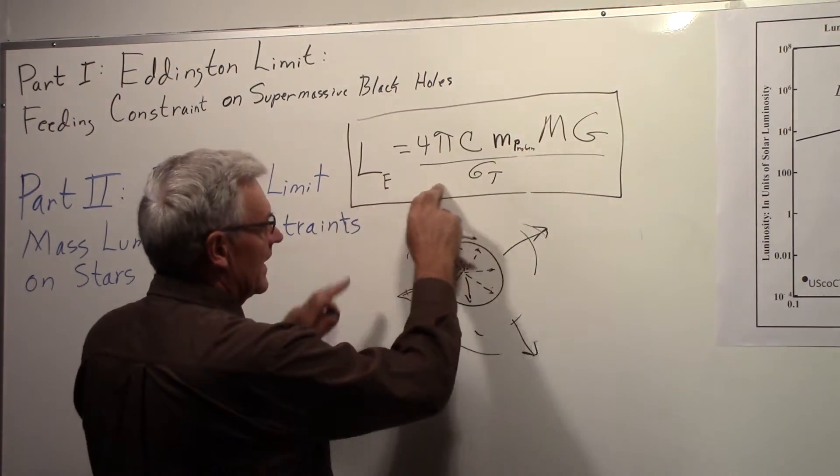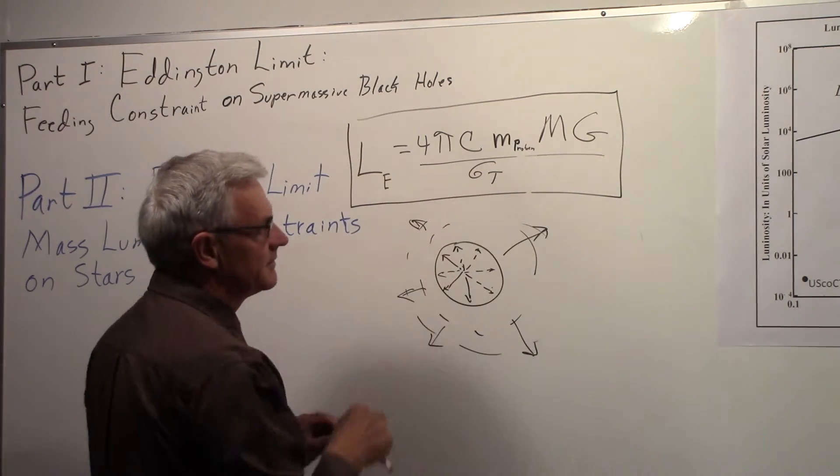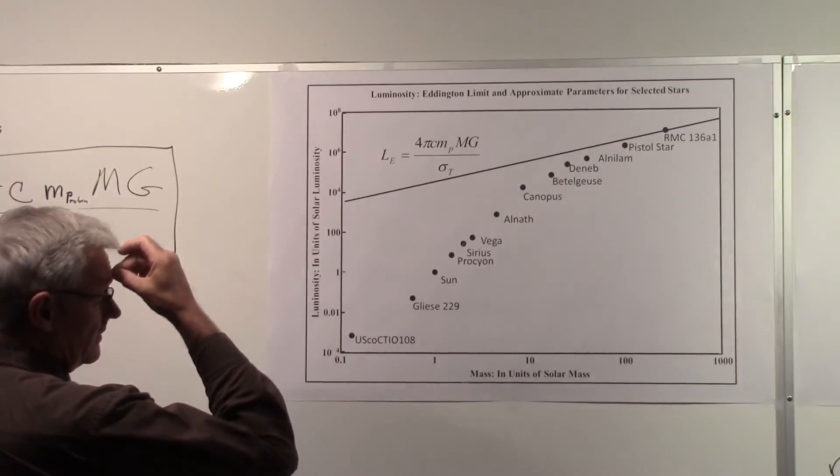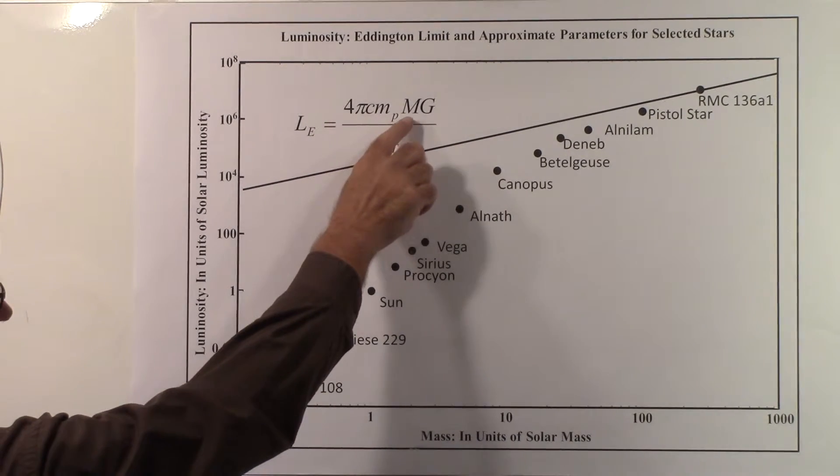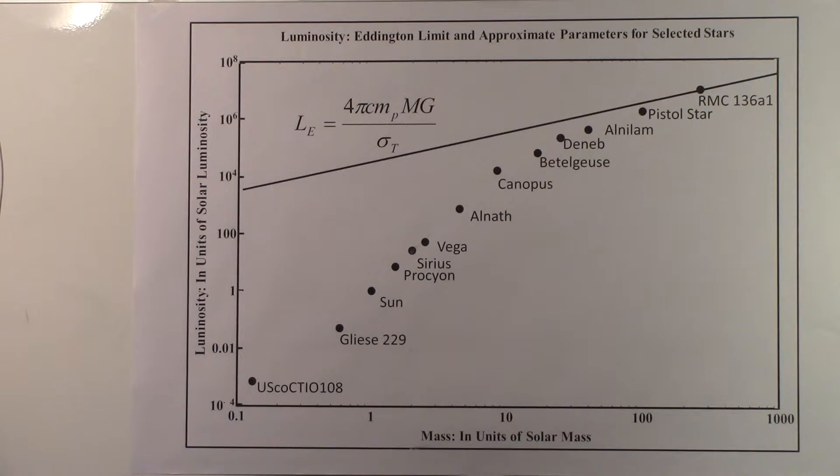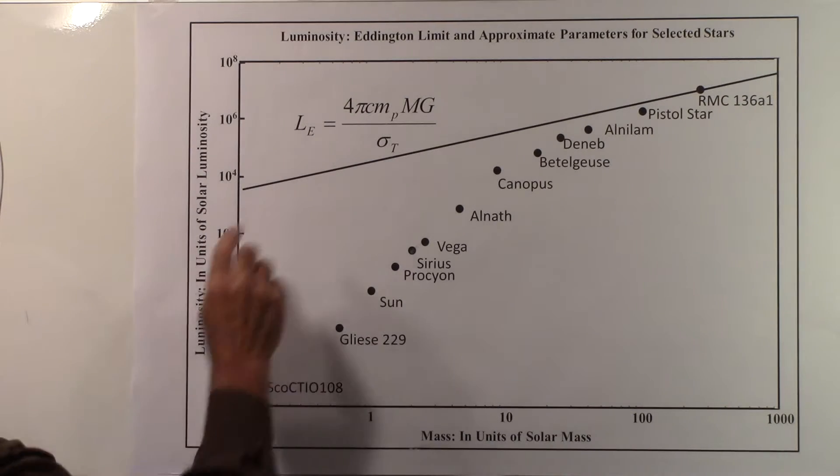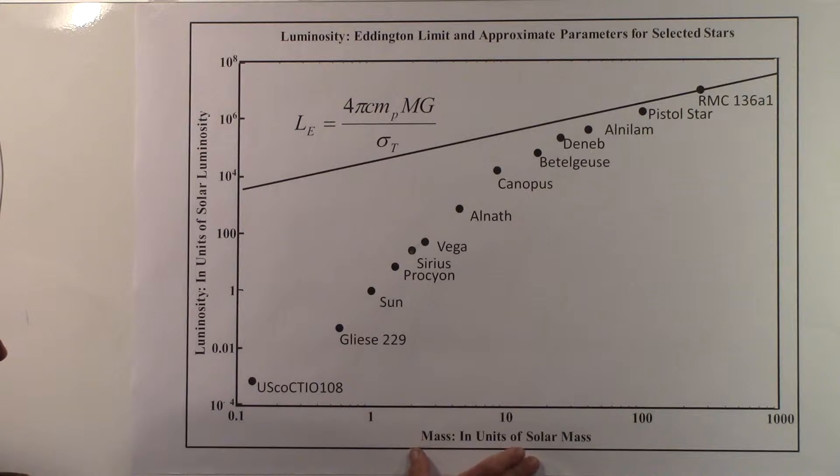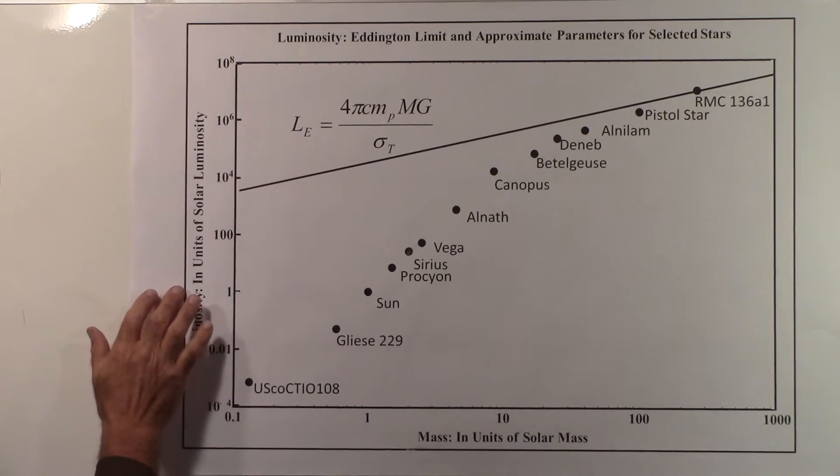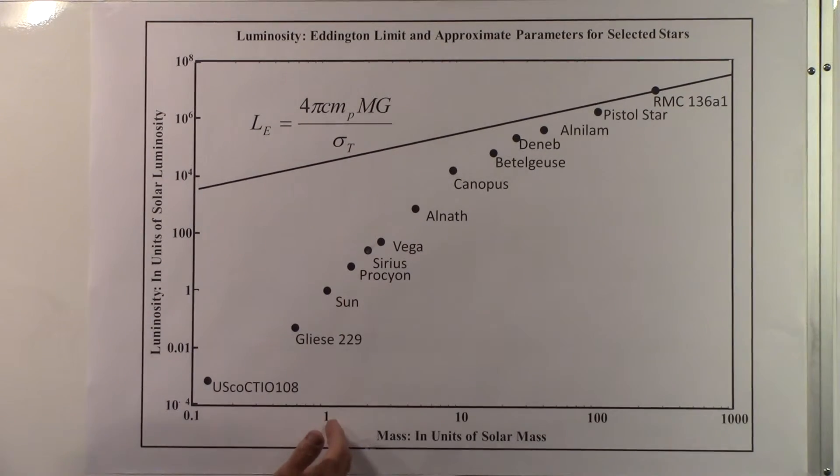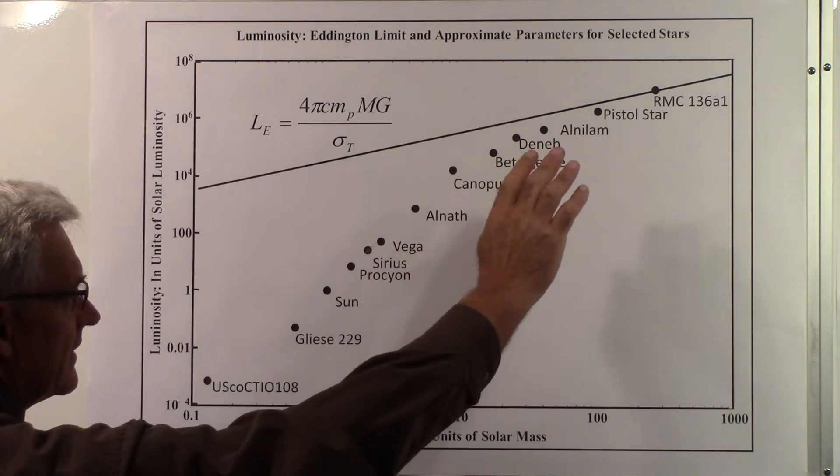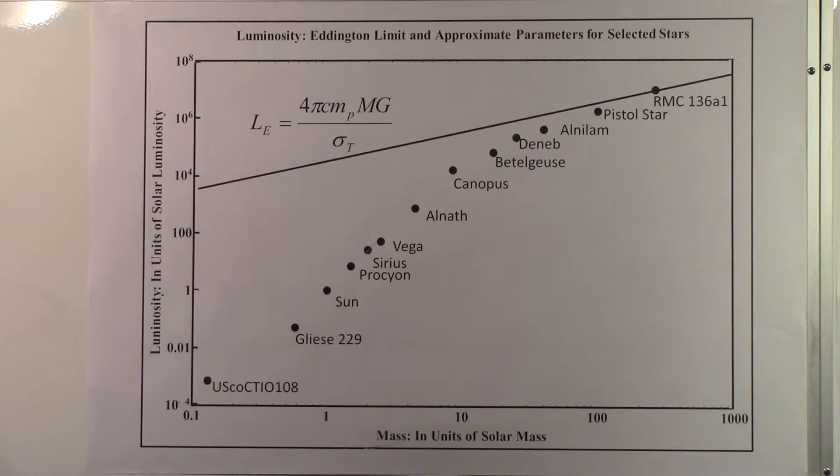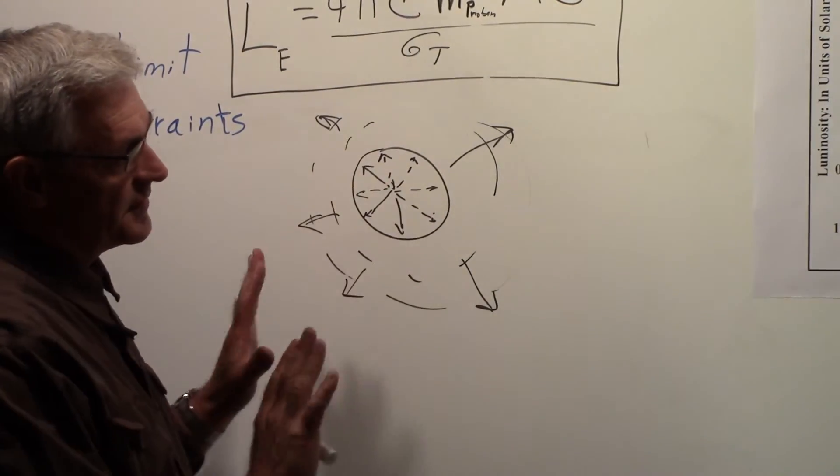We just wanted to take a look now at different stars given their luminosity and their mass to see how they compare to this expression. This expression is plotted here: the Eddington luminosity limit, four pi c, mass of the proton, mass of the particular star, gravitational constant, and the Thompson cross-section. That's the theoretical expression. Then what is shown here in units of solar mass are the mass of different stars and their luminosity. Here's the Sun: its mass on this scale is 1 and its luminosity is 1. You can see that as the mass goes up and the luminosity goes up, it seems to approach a limit, the Eddington limit, where the luminosity and the mass of the star can't become any larger because the star would basically rip its surface off.